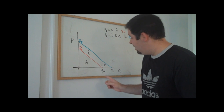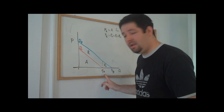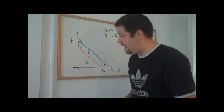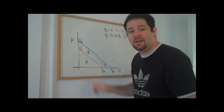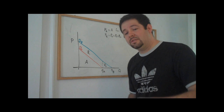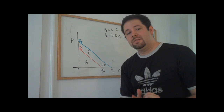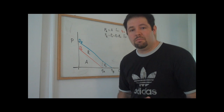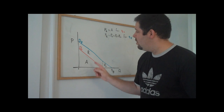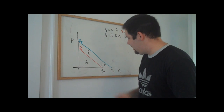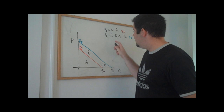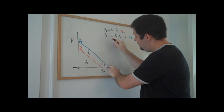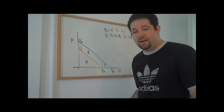For example, the monopolist would love to sell QA units to individuals with demand curve DA, and then set a price of PA to extract all of the consumer surplus. The monopolist would also love to do the same thing with type B consumers, who have this higher demand curve — charging a price of PA, which is A plus B1 plus B2, for this higher quantity QB.